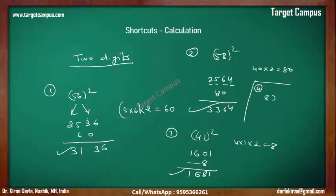Question number 4: square of 87. Left: 8 squared is 64. Right: 7 squared is 49. Middle: 8 into 7 is 56, twice that is 112. We write 112 starting from the tens place — leave the units place and start from there. If you have three digits, write below accordingly. The answer is 7569. Practice this — it will save your time like anything.